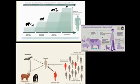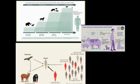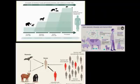Zoonotic diseases come from animal reservoirs and pass as infection to humans, and then spread from human to human. Transmission routes include airborne viruses, vectors, close proximity with animals — such as keeping livestock nearby, consuming milk or meat, and bites from infected animals. These are the main ways we get infected from animals, forming the category of zoonotic diseases.